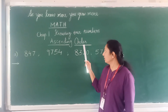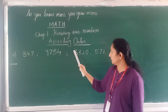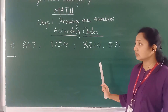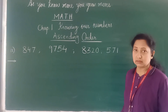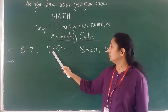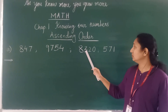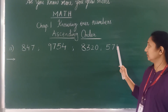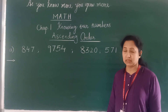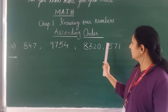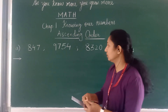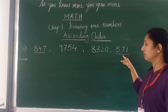Now we will start with ascending order. Here we have written the numbers. The first step is: whatever the given numbers, you have to count all the digits. The first number has 3 digits, the second has 4 digits, then 4, 4, and 3. We are arranging in ascending order — ascending means from smallest to biggest. Amongst these, which have 3 digits? We have 2 numbers with 3 digits: 847 and 571.